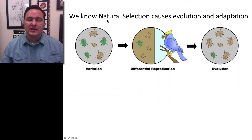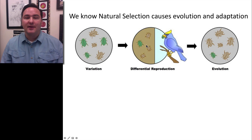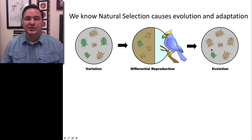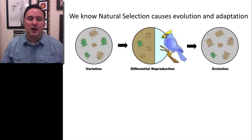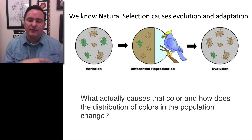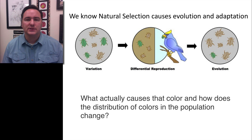We just learned that natural selection causes evolution and adaptation. Whenever there is variation present, you have a selective pressure — like this bird eating the beetles — and on average it's going to eat more green beetles than brown beetles because of their color. So you get a change in a characteristic over time, with more and more brown beetles beginning to appear. But the question is: what actually causes that color in the beetles, and how does the distribution of colors in the population change over time?